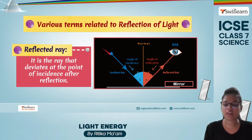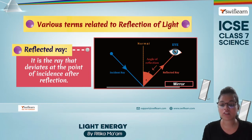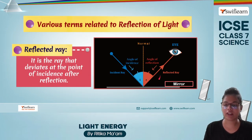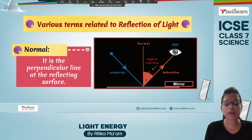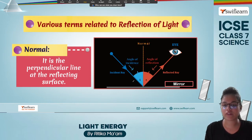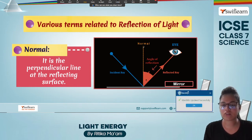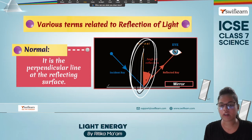The reflected ray is the ray that comes from the surface after reflection — the ray that comes back after reflection is known as the reflected ray. Normal is the perpendicular line at the reflecting surface. Normal actually divides the angle of incidence and angle of reflection. You can see the perpendicular here at the surface — that is the normal.